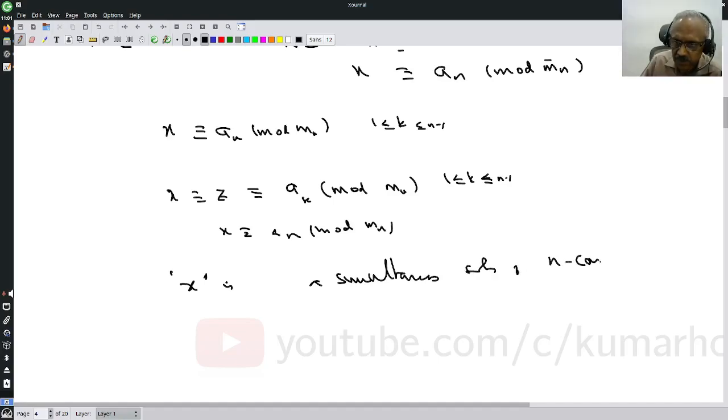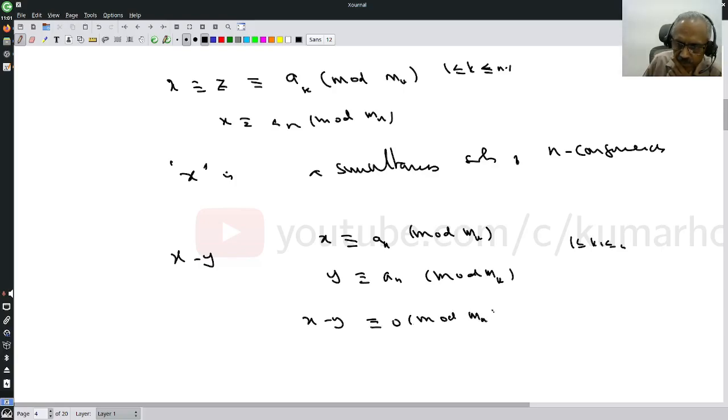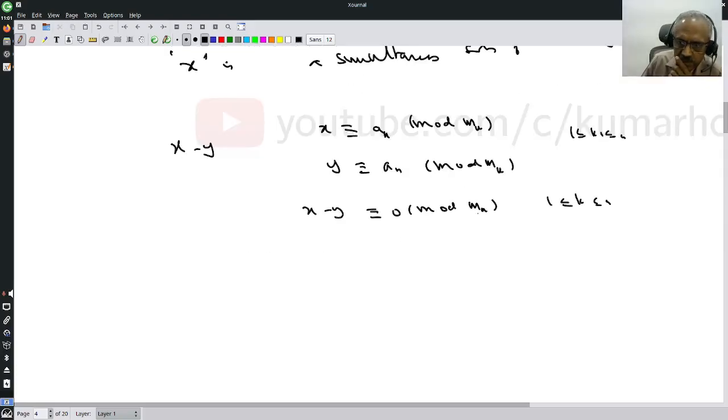Suppose x and y are both solutions: x is congruent to ak mod mk and y is congruent to ak mod mk for 1 less than or equal to k less than or equal to n. Then x minus y is congruent to 0 mod mk for all k. Since these are all co-prime, mk divides x minus y for all k. That means x is congruent to y mod m1 to mk.